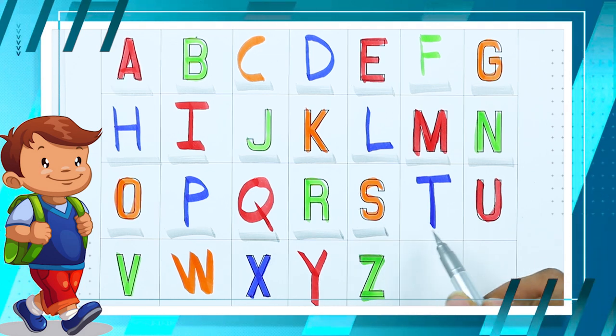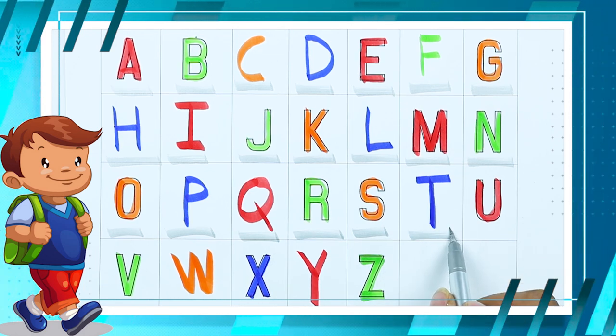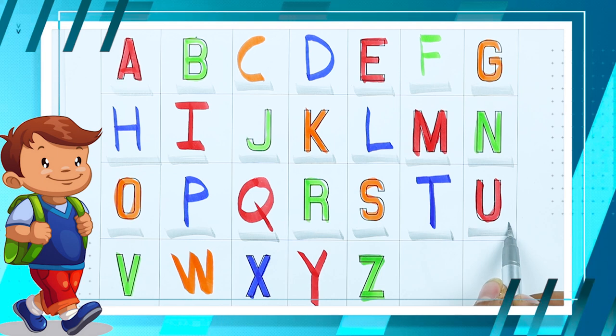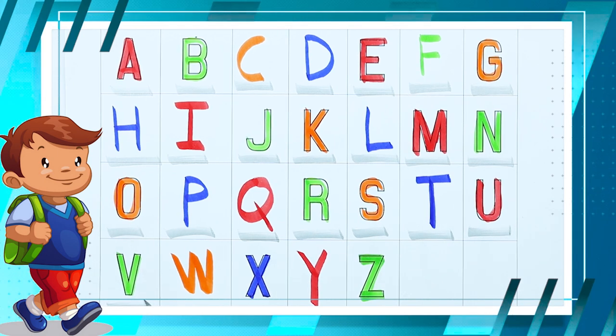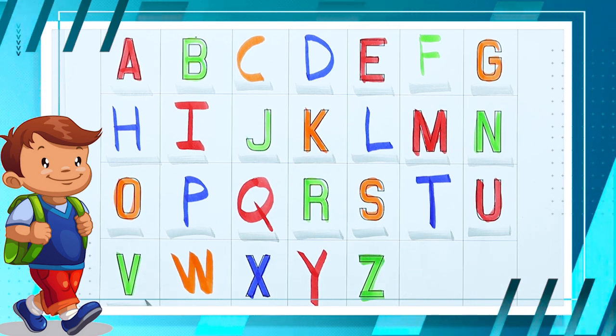S. S for sheep. T. T for tiger. U. U for umbrella. V. V for van.